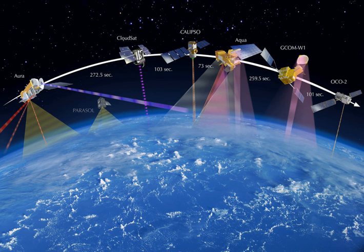NASA launched the first American satellite, Explorer 1, on January 31, 1958. The information sent back from its radiation detector led to the discovery of the Earth's Van Allen radiation belts.